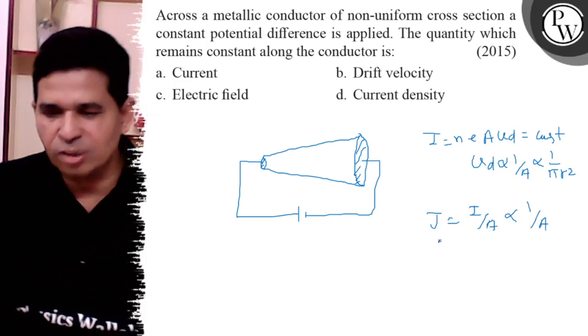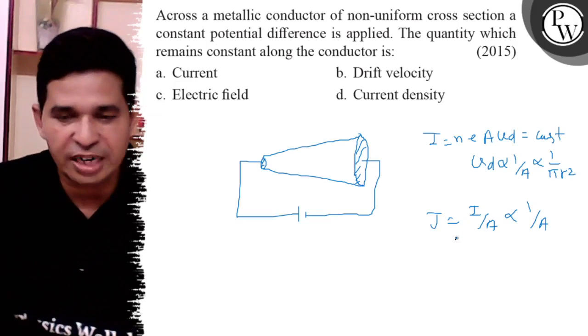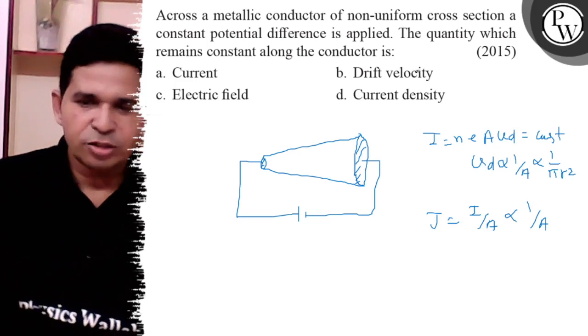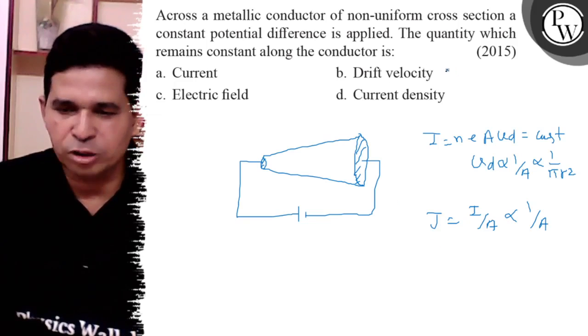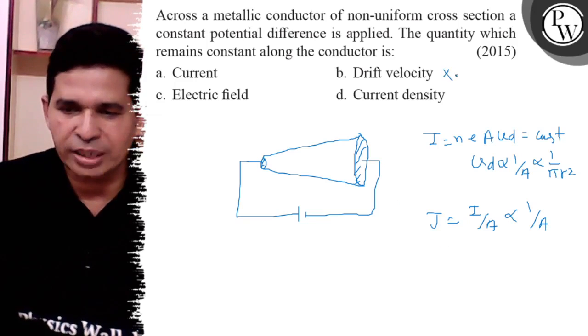J is not constant, so electric field is also not constant. Drift velocity depends on cross-section area, so it is not constant.